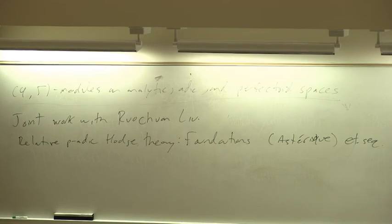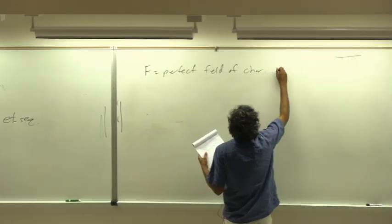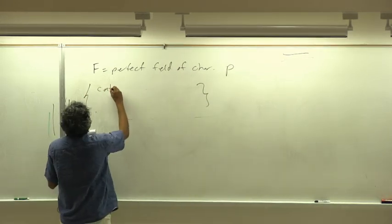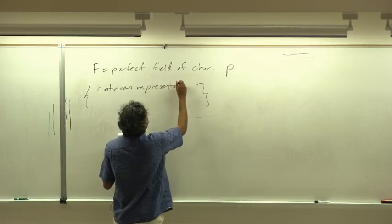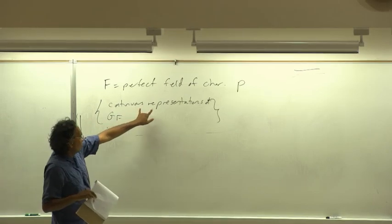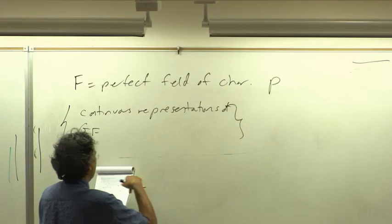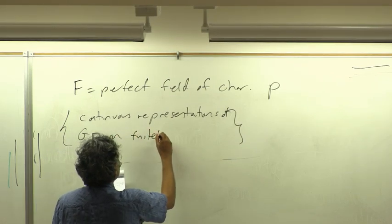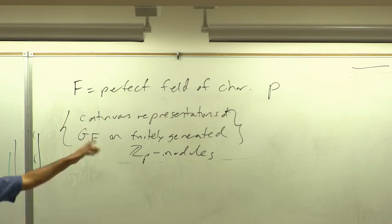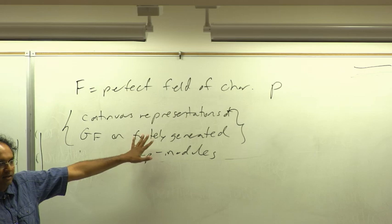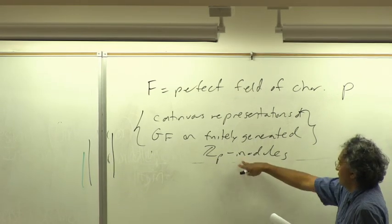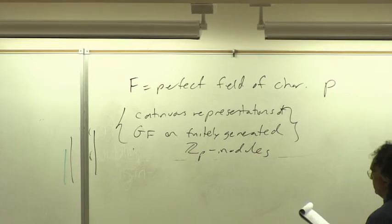Let f be a perfect field of characteristic p. Throughout this talk, p will always be some fixed prime number. Consider the following category: representations of the absolute Galois group of f. It has a topology as a profinite group, so I can talk about continuous representations of it with some topology on the target. If the target is a finitely generated Z_p module, the group of automorphisms has a topology. I'm going to take continuous maps from G_f into automorphisms of such things, and view this as a tensor category.